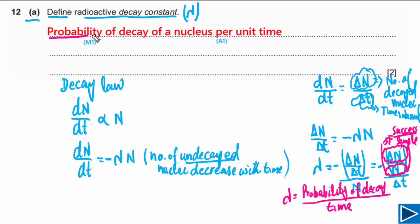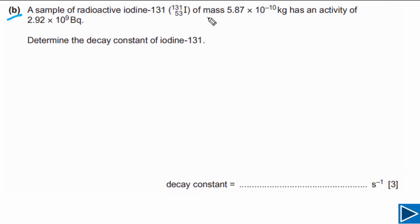So the definition is: the probability of decay per unit time. Writing 'probability of decay' gets you one mark, and writing 'per unit time' gets you the second mark. This question has two marks in total. Now for Part B, the mass of the sample is given as 5.87×10⁻¹⁰ kg.